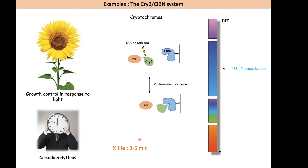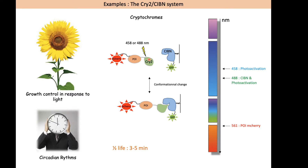To perform an optogenetic experiment, researchers have, for example, targeted CIBN to a specific compartment inside the cell and fused their protein of interest to CRY2. You can then tag all of these proteins with fluorescent markers such as GFP or mCherry, and with the development of far-red fluorescent proteins you can add another level of complexity with a reporter tagged with a far-red fluorescent protein.